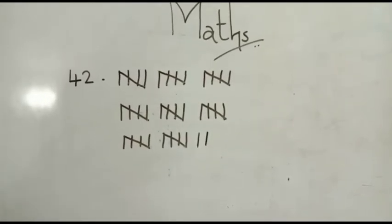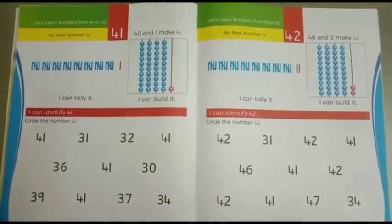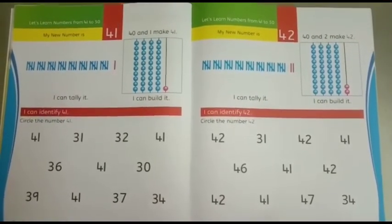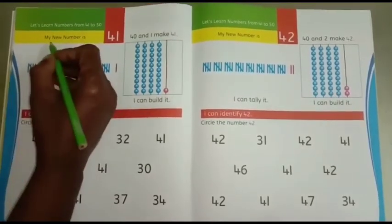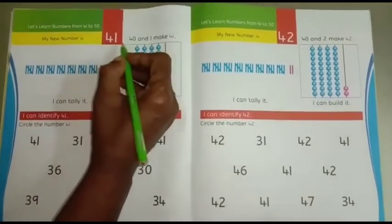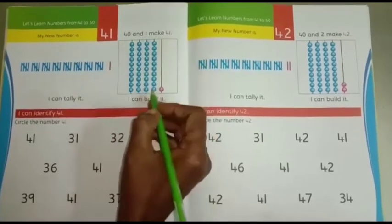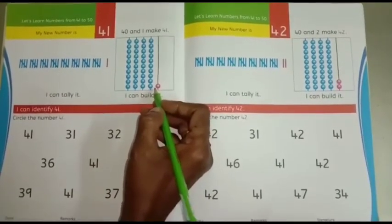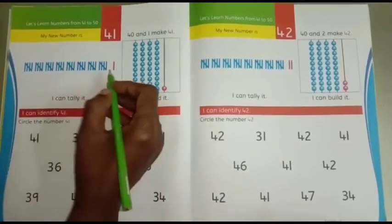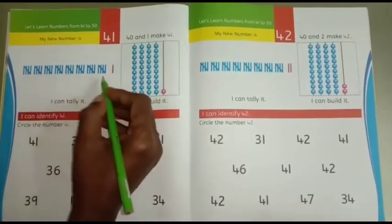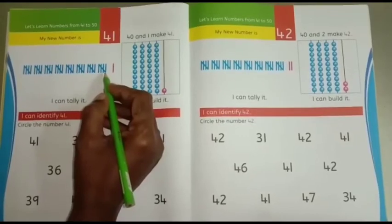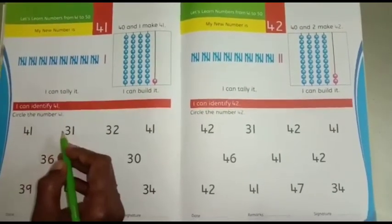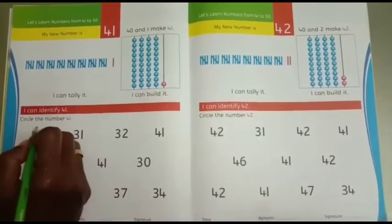Understand all of you? Take your wings, fly high. Textbook page number 32 and 33. My new number is 41. 40 and 1 make 41. Count the 41 beads. Then tally mark of 41, practice. Then circle the number 41.